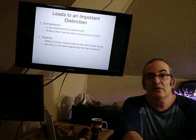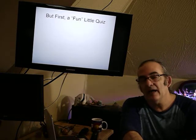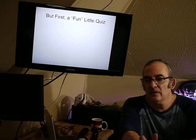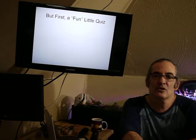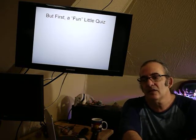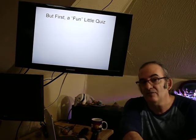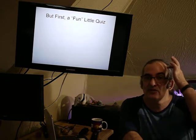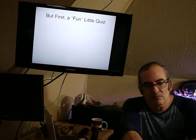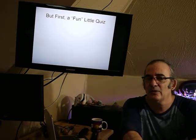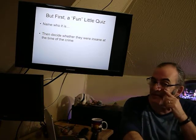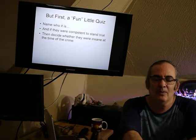Here's a fun little quiz. Get yourself a piece of paper and number it from 1 to 13. In the first column, try to identify the person — what's their name. The second and third columns: were they competent to stand trial, yes or no? And finally, did they mount a successful insanity defense? Let's go ahead and look at the characters. A lot of these you might not know, and if you know all of them, maybe we should worry a little bit about you.